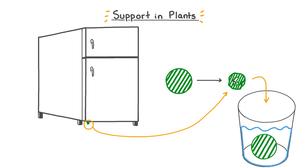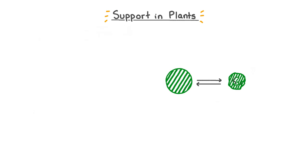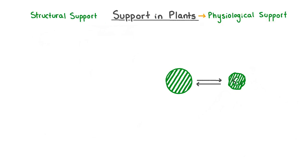While humans, like many animals, have a skeleton to support them, plants do not. Therefore plants need other support mechanisms to maintain their cell shape and their overall shape, and also to protect them. There are two methods that a plant uses to maintain its shape and structure: physiological support and structural support.